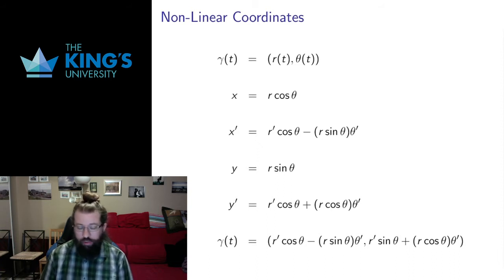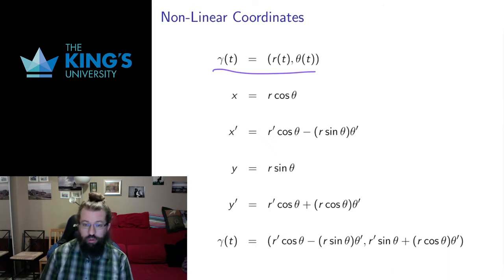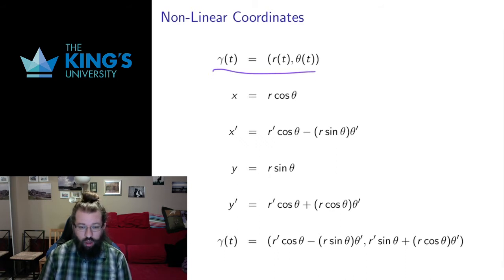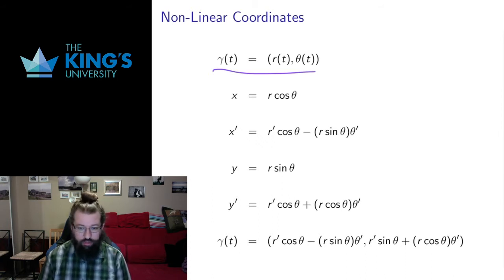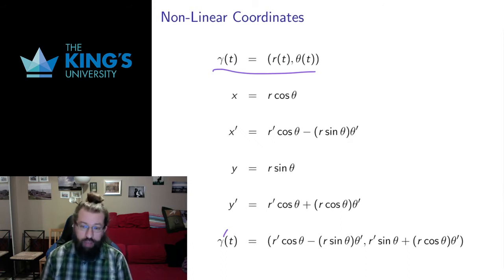We defined parametric curves also in different coordinate systems. For example, in R2 I could have a parametric curve defined in polar coordinates. The point I want to make here is that tangents and tangent vectors as derivatives are really a Cartesian notion. They reflect the fact that the Cartesian coordinates are still our basic coordinate system. So if you wanted to calculate a tangent vector gamma prime for a nonlinear coordinate system, you'd actually have to translate things back into Cartesian coordinates.